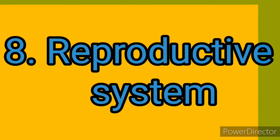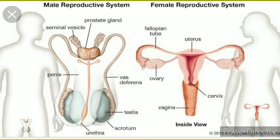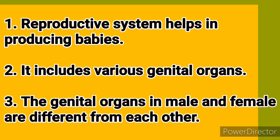Now the last system is the reproductive system. The reproductive system helps in producing babies. It includes various genital organs. The genital organs in males and females are different from each other.